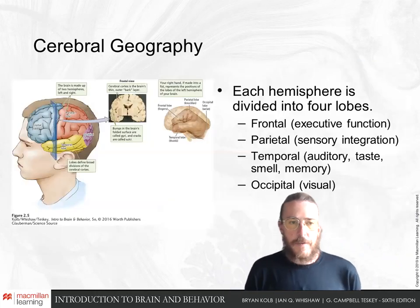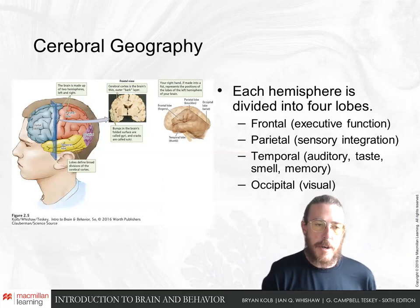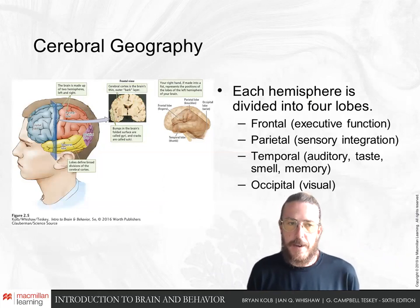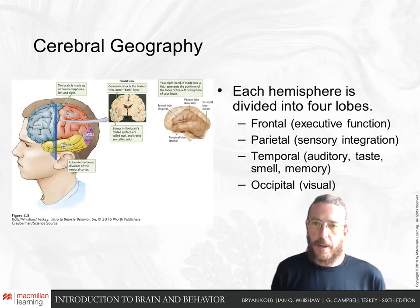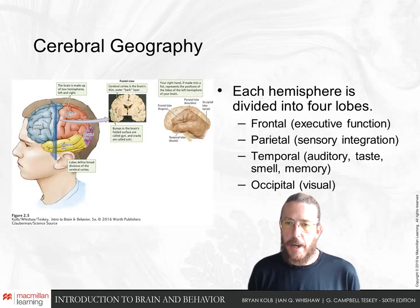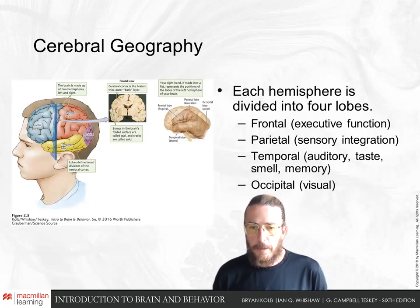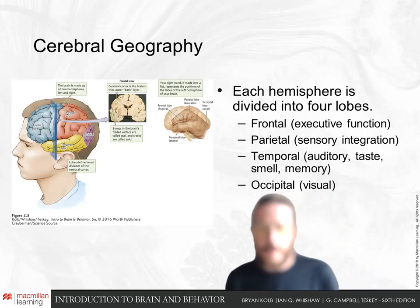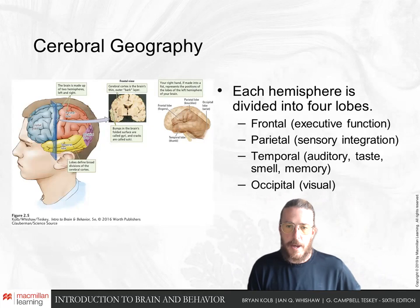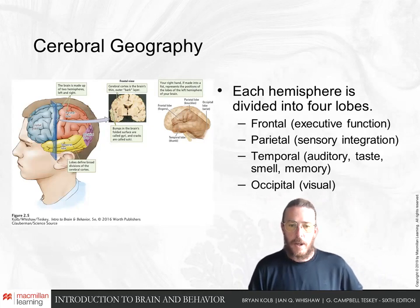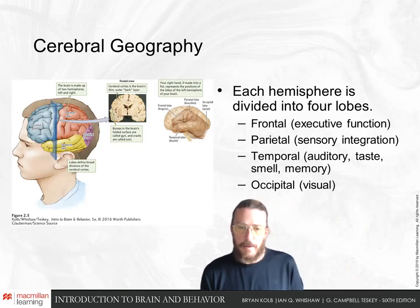Each of these lobes has many sub-regions but a general role in cognition and behavior. The frontal lobe is involved in executive functions like planning. The parietal lobe integrates sensory information together. The temporal lobe is involved in audition, taste, smell, and has important roles in memory. The occipital lobe is involved in vision. We'll talk about these in more detail throughout the class.